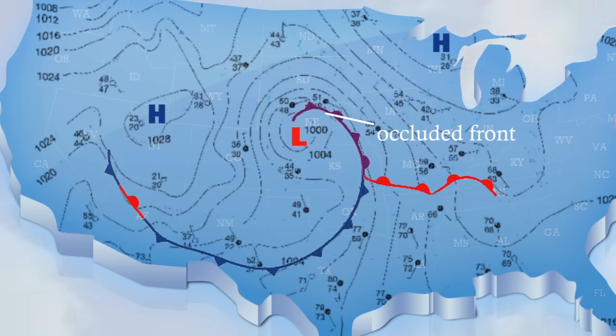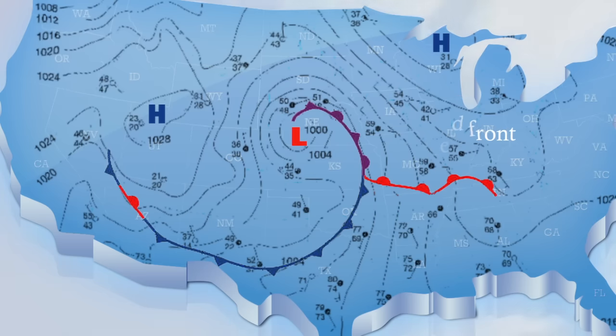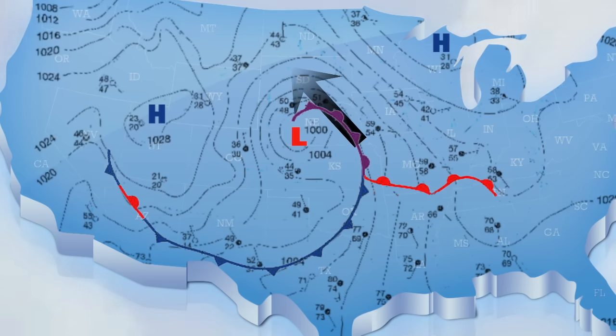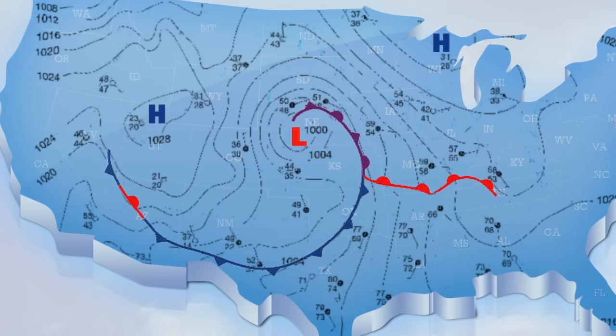A purple line with the cold and warm front symbols on the same side is called an occluded front. When this is present, it means the low pressure system is beginning to fade away.